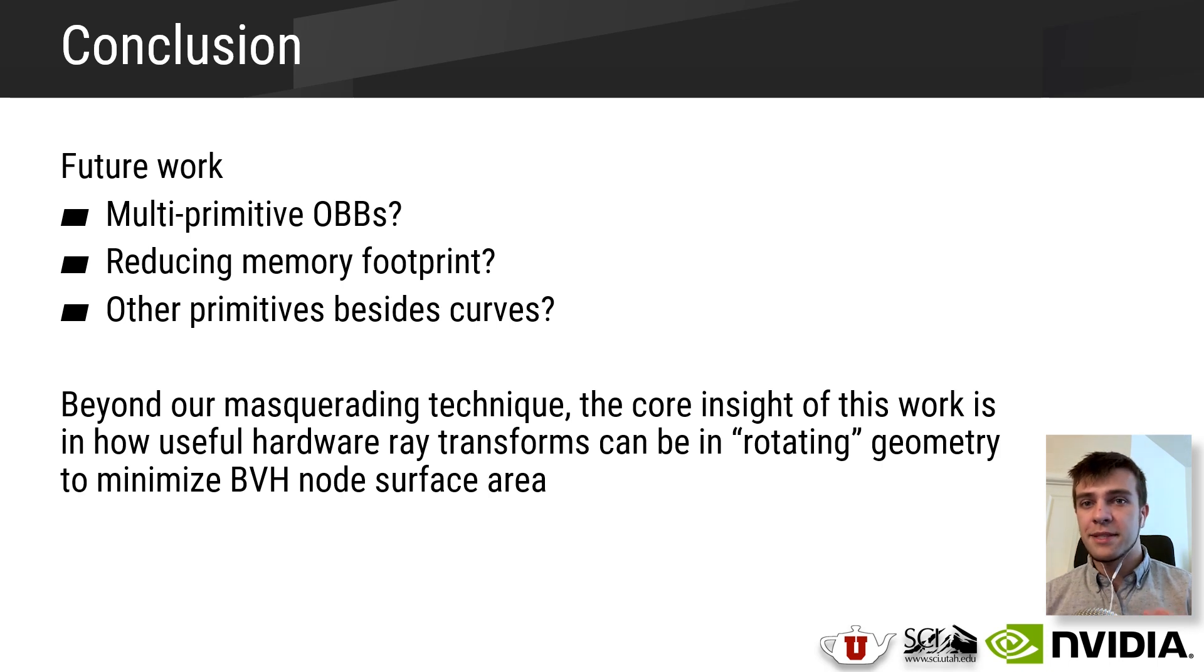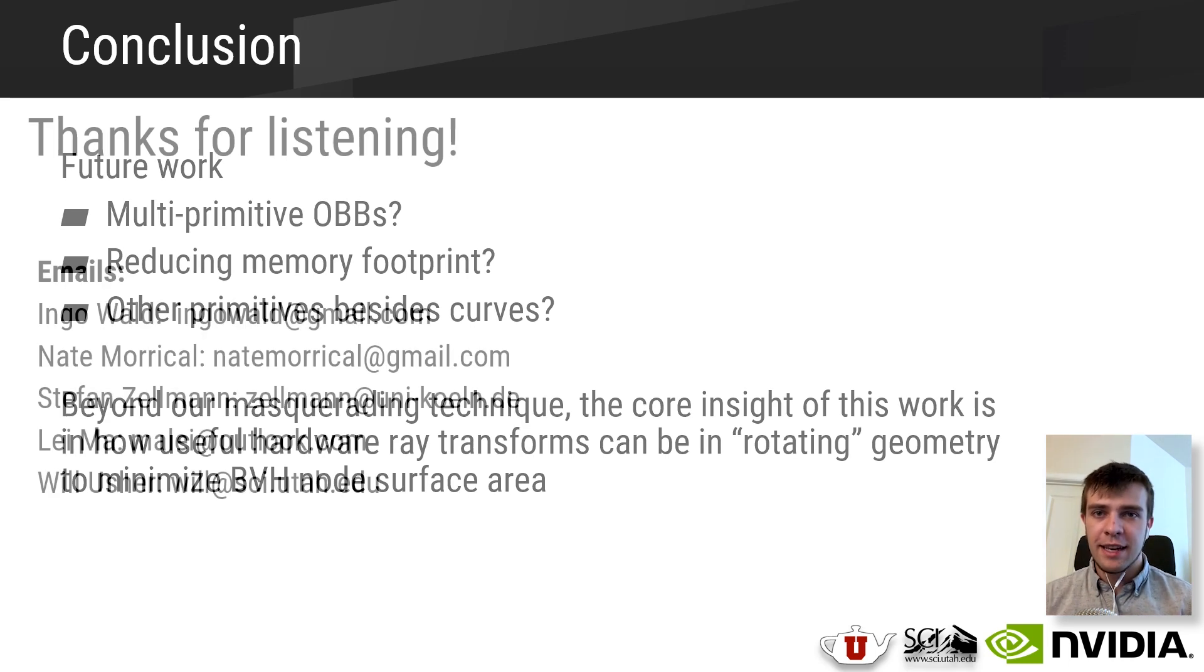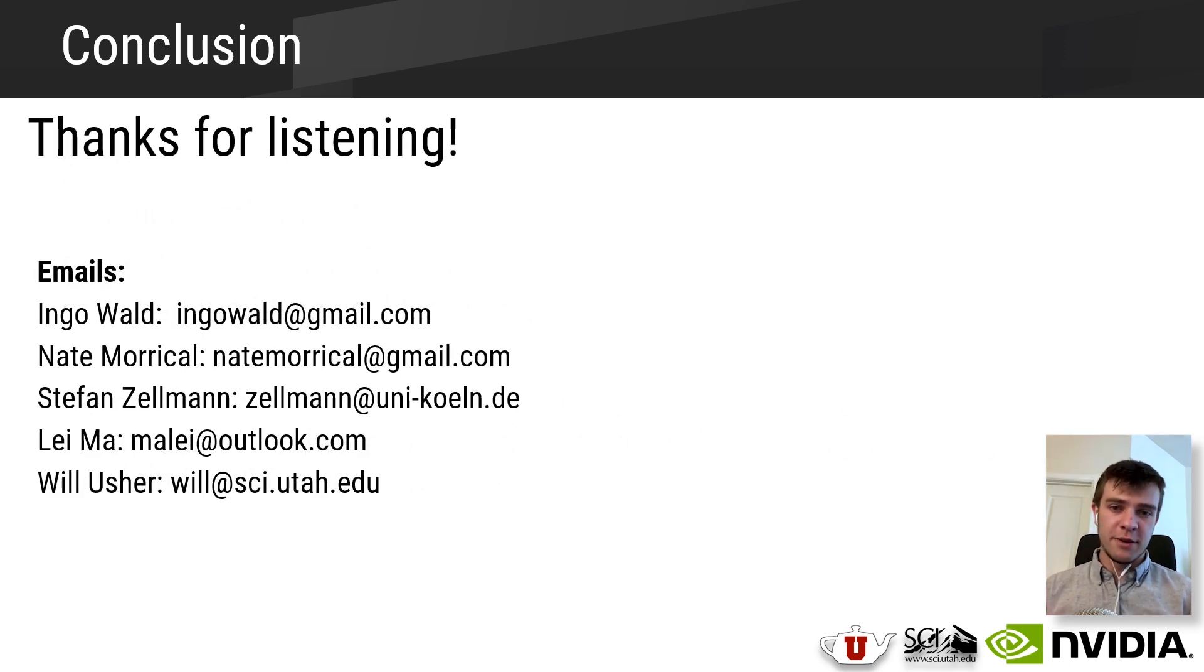Ultimately, we're pretty optimistic about our approach. Even beyond our specific masquerading technique, perhaps the core insight of this work is in how useful hardware ray transforms can be in rotating geometry to minimize BVH node surface area. Thank you for listening, and feel free to email me if you have any questions.